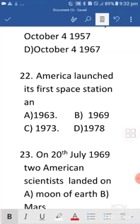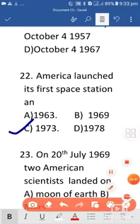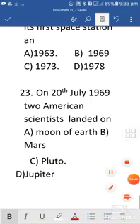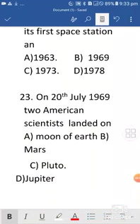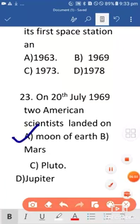So question 23: on 20th July 1969, two American scientists landed on, okay, so they landed on moon of Earth, so option is correct.